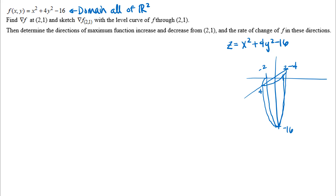The graph of our surface is a paraboloid that opens up, which lets us think about the range of the function: z greater than or equal to negative 16, or written as an interval, negative 16 to infinity. It's not required to think about the graph, domain, or range, but it's always a good idea to wrap your head around what you're looking at.